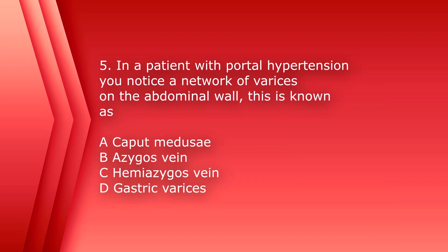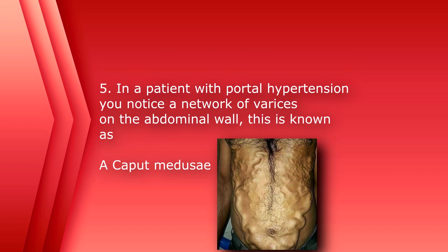Number five. In a patient with portal hypertension, you notice a network of varices on the abdominal wall. This is known as A, caput medusa, B, azygos vein, C, hemiazygos vein, or D, gastric varices. The answer is A, caput medusa.